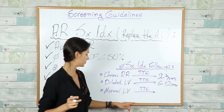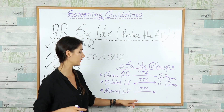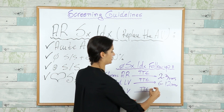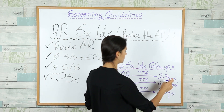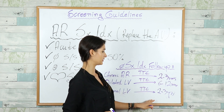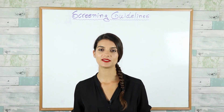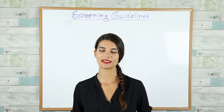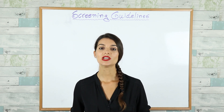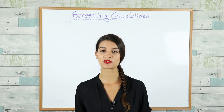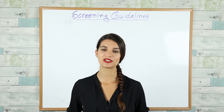If the patient's left ventricle is normal, you need to repeat the echo every two to three years. This concludes our video on aortic valve guidelines. This information will be one hundred percent useful to you, so try to remember and memorize as much as you can. Thank you very much for watching.